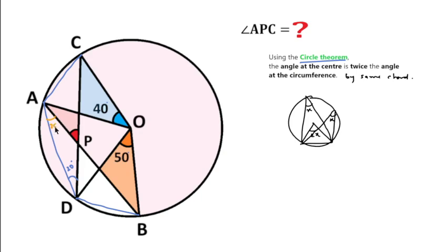We have already found this is 25 degrees and this is 20 degrees, and this is an exterior angle. So according to the exterior angle theorem of a triangle, we can write 20 plus 25, that is 45.